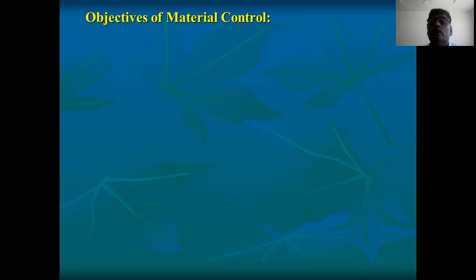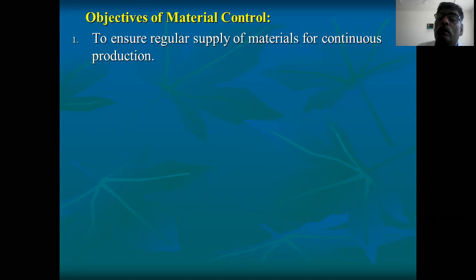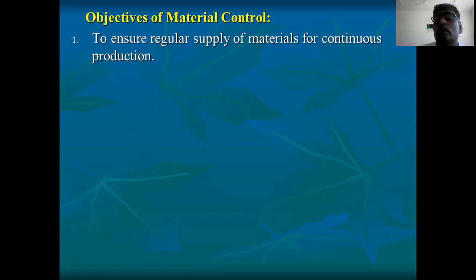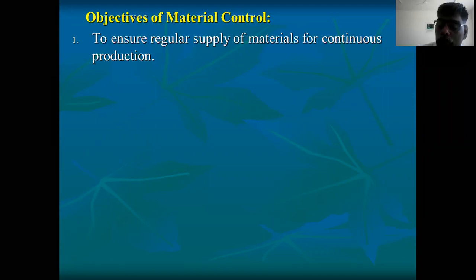What are the objectives of material control? The main objective of material control is to ensure regular supply of material for continuous production — to supply material to the production department continuously without any break or stoppage. If there is any break in supply of raw material, it creates problems at different levels. Therefore, regularly supplying the material is the first objective.